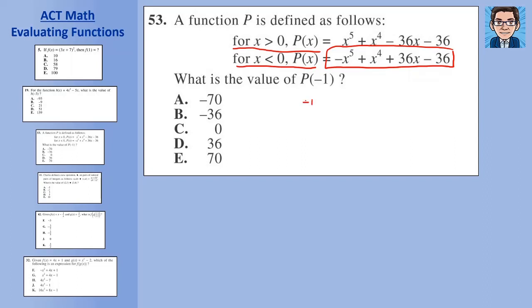We're going to get negative 1 to the fifth, that's the negative out front, plus negative 1 to the fourth, plus 36 times negative 1, minus 36. We've got to be very careful with signs. Negative 1 to an odd power is negative 1. Negative 1 to an even power is positive 1. So negative negative 1 is plus 1, plus 1, minus 36, and minus 36. Put those all together and we get minus 70, or A as our answer.